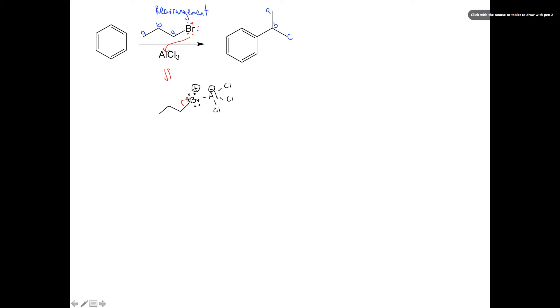Now this bromine is a really good leaving group. This carbon-bromine bond is going to break. That'll lead us with this three carbon chain here, and our bromine-aluminum species here.